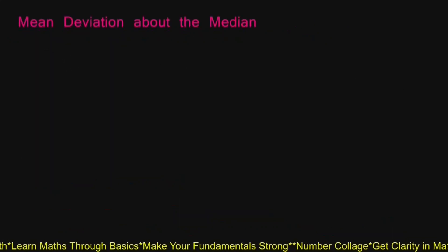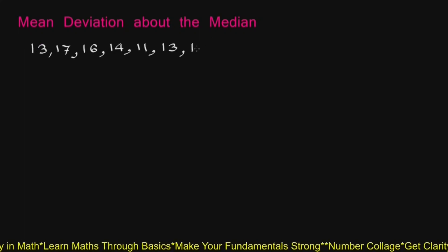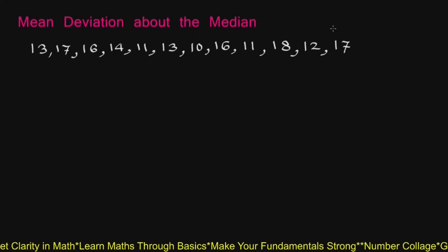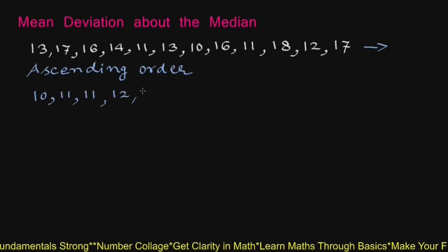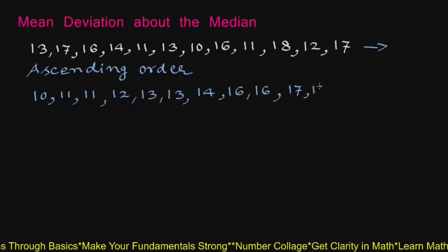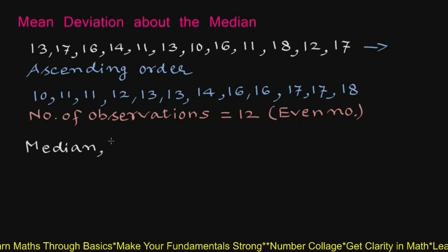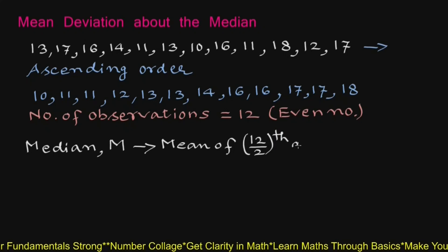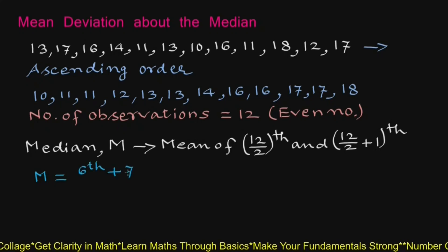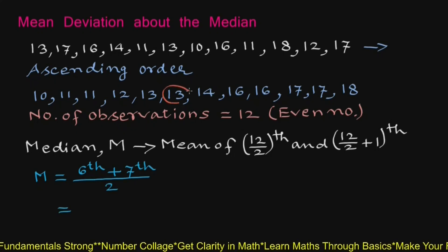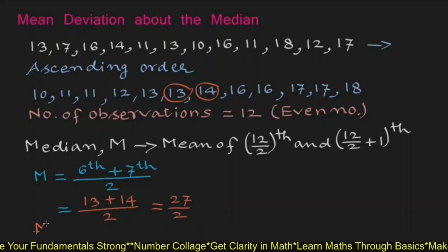Find mean deviation about the median of the data: 13, 17, 16, 14, 11, 13, 10, 16, 11, 18, 12, 17. First we have to find the median, so we write this data in ascending order: 10, 11, 11, 12, 13, 13, 14, 16, 16, 17, 17, 18. The number of observations is 12, which is an even number. Therefore median M will be the mean of the (12/2)th and (12/2 + 1)th observations, that is the mean of the 6th and 7th observations. The 6th observation is 13 and the 7th observation is 14, so median M is (13 + 14) / 2 = 27/2 = 13.5.